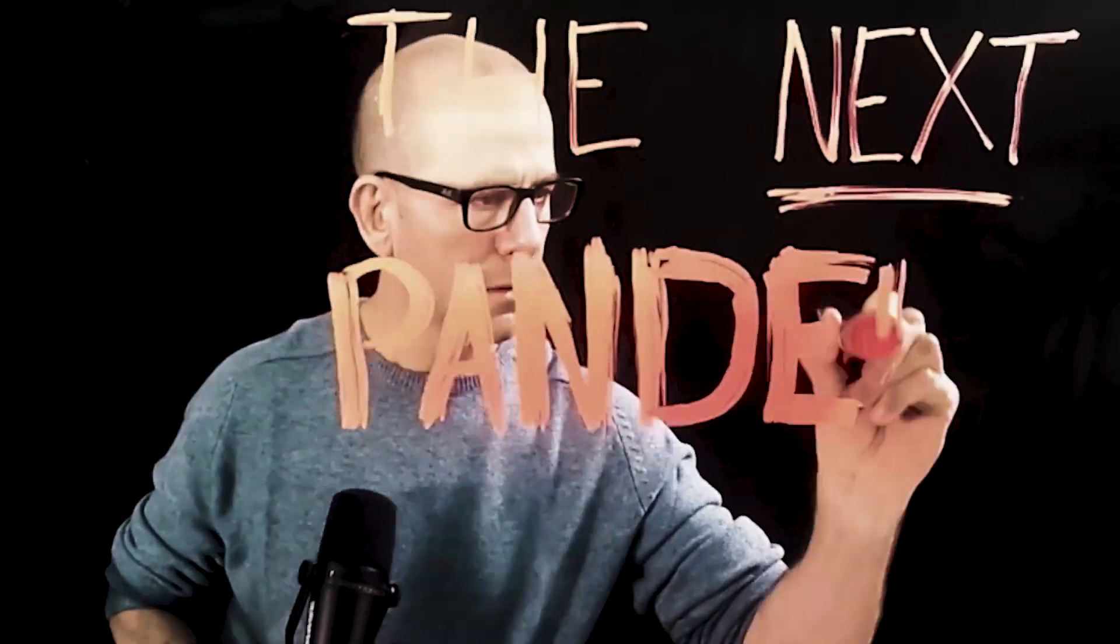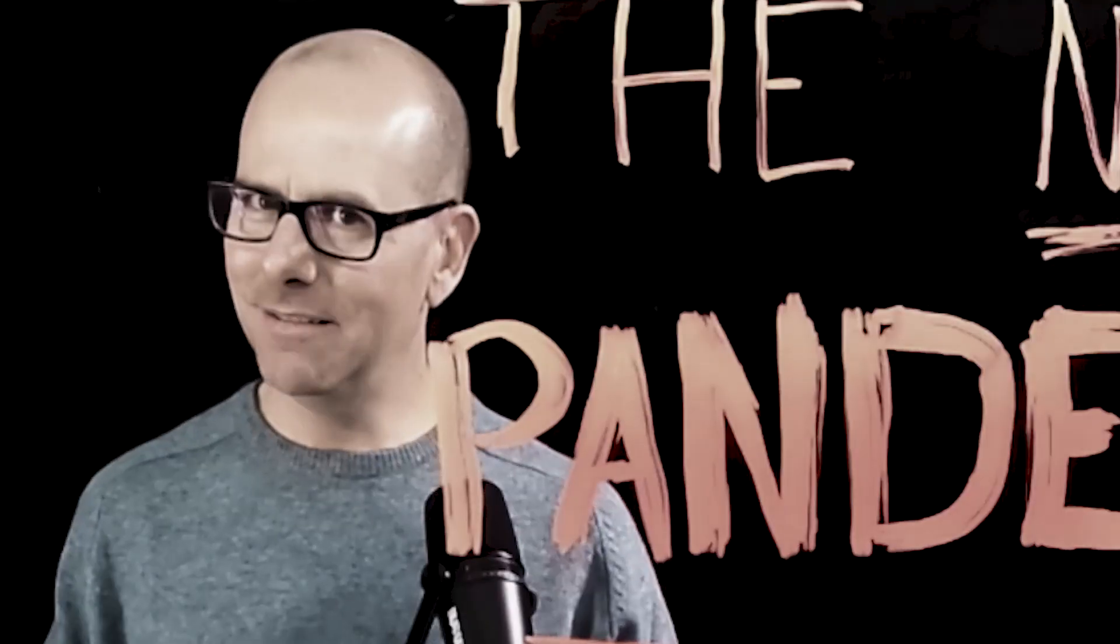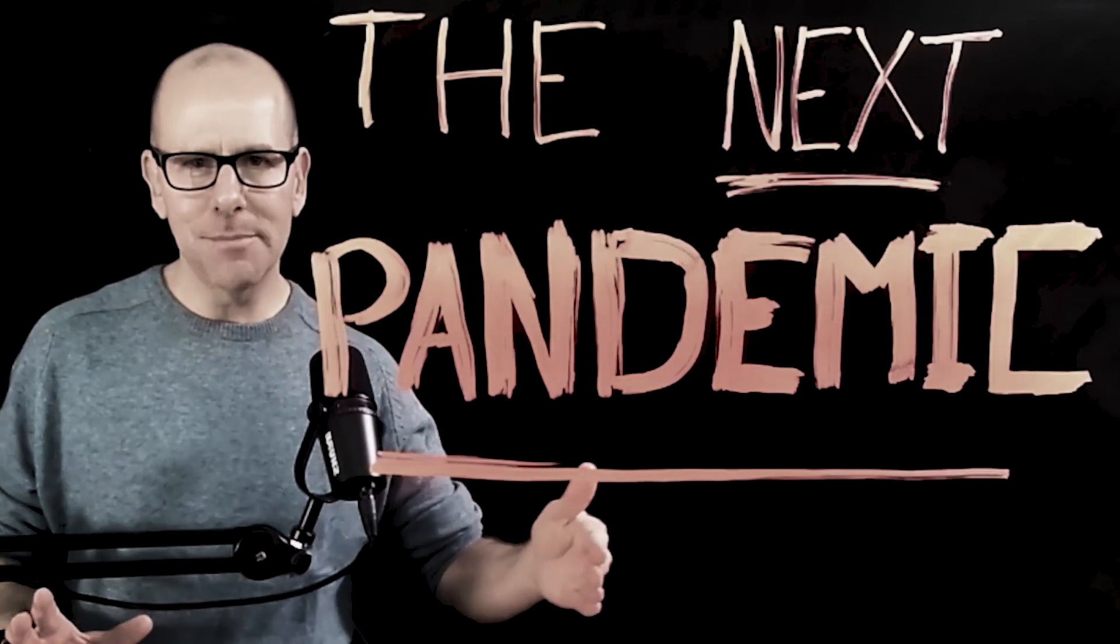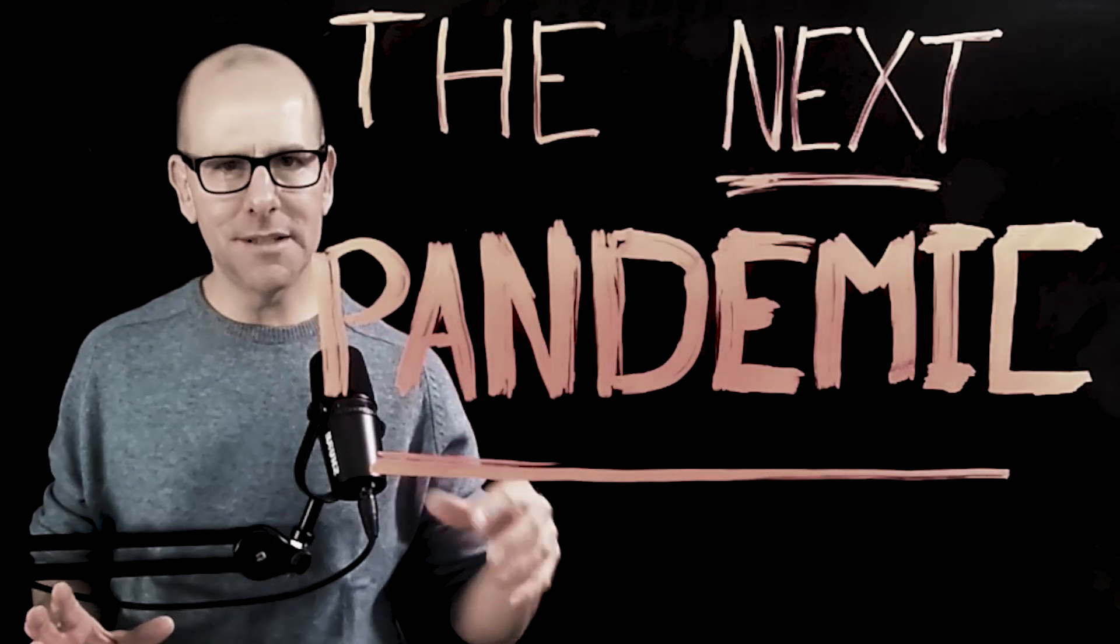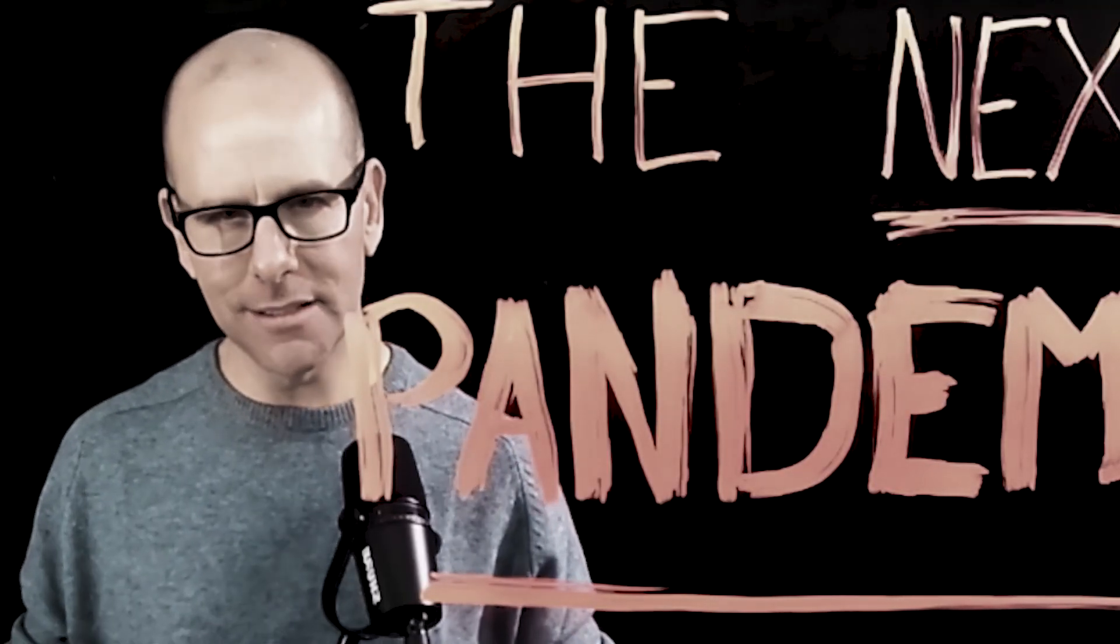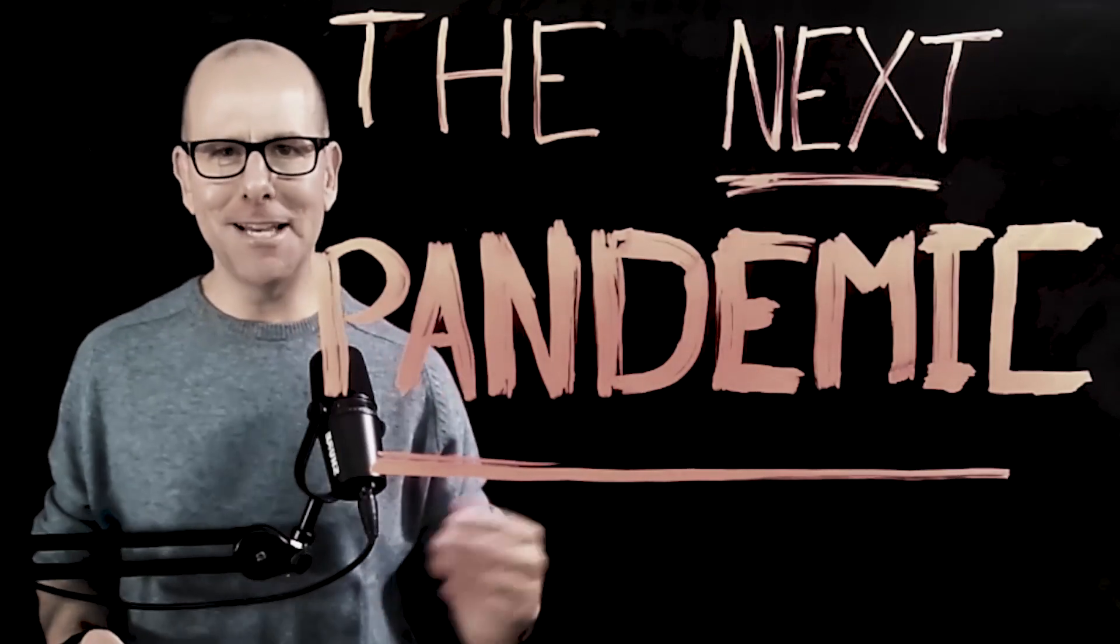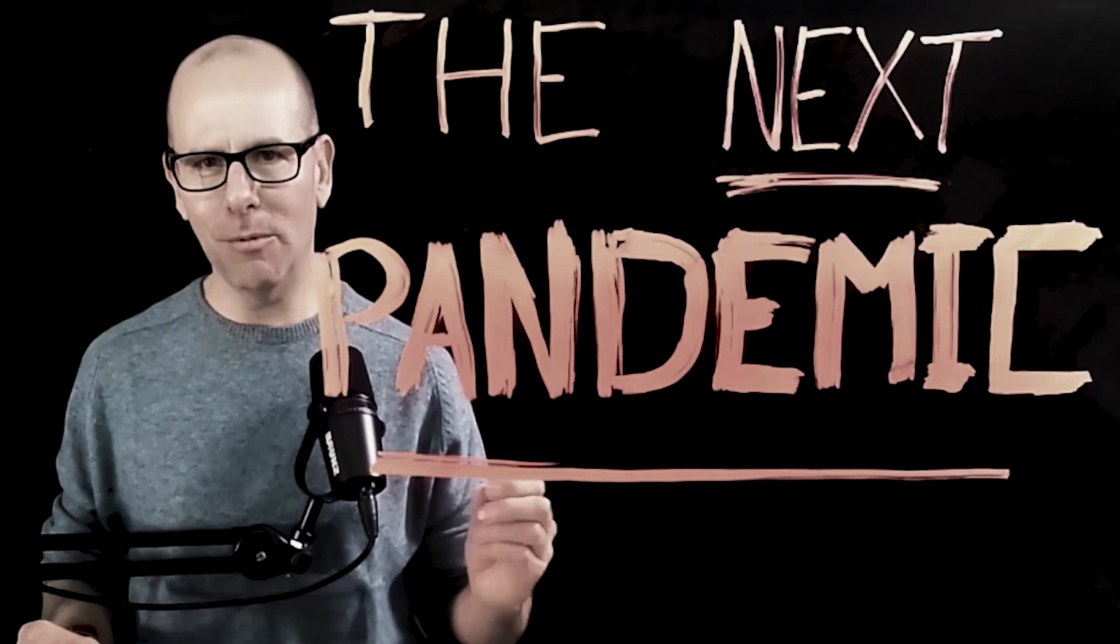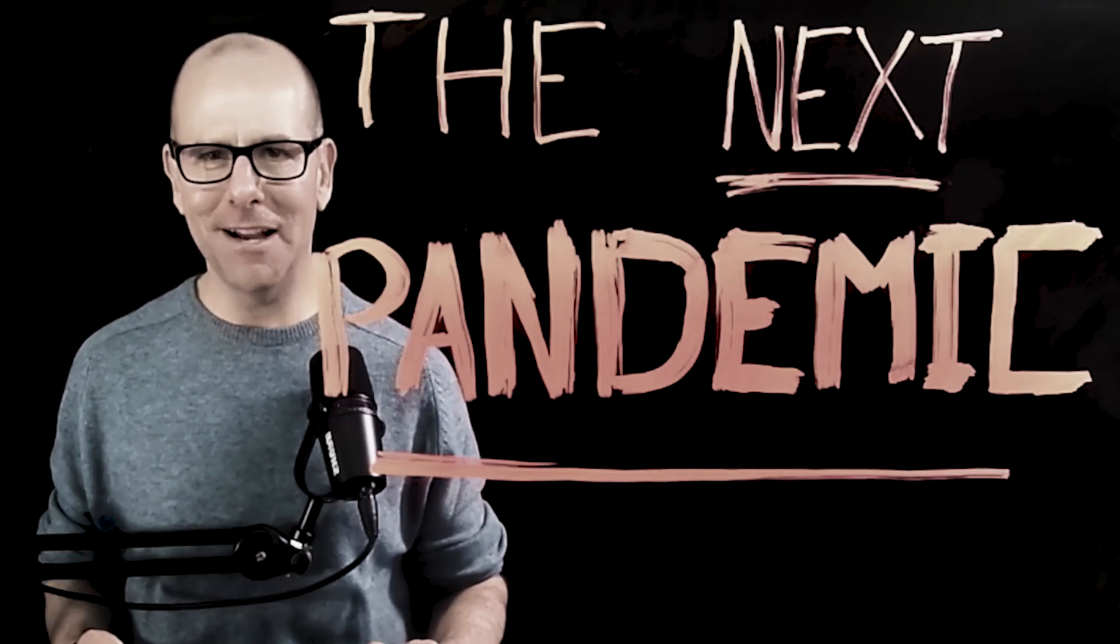Firstly, why is it that we should have seen this pandemic coming a mile off? And spoiler alert, some of us did. Secondly, why is it that the next pathogen that comes along may well be far more ominous than what we've seen in COVID-19? And I'm not trying to be melodramatic, but there's good reasons to believe that. And then finally, why is it that I'm optimistic? I believe that we're going to go into the next pandemic far better prepared than we were for this one.